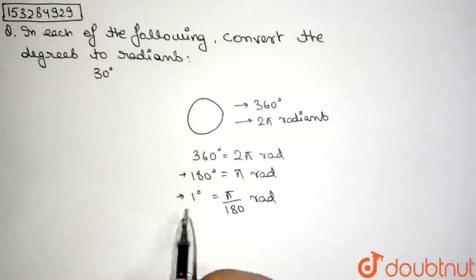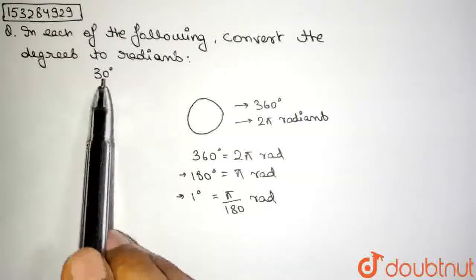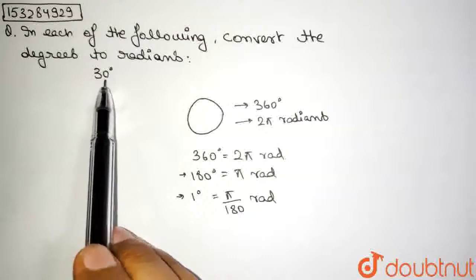Now, this is the relation that we need to use. 1 degree is equal to π by 180 radian. So, in this question, it has been asked: how many radians is 30 degrees equal to?